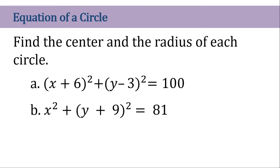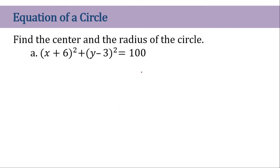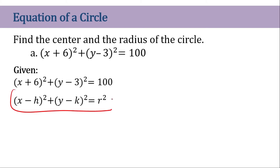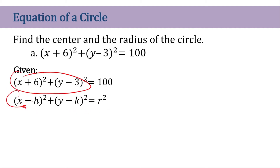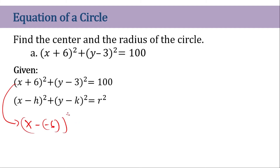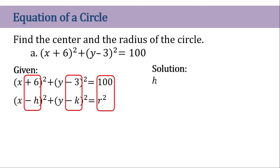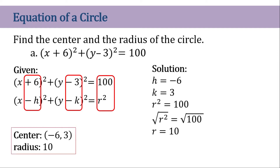Now let's go in the other direction: given the circle equation, let's find the center and the radius. For number 1, we know the formula of the circle and we need to match the given equation to it. Remember it should be x minus and y minus. So this becomes x minus negative 6. Plus y minus 3 squared equals 10 squared. So h equals negative 6, k equals 3, and r squared equals 100, therefore r equals 10. So the center is (-6, 3) and the radius is 10 units.